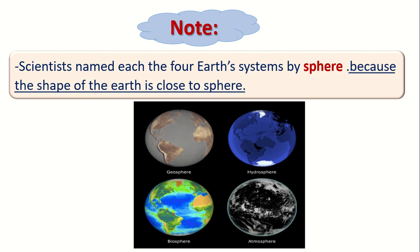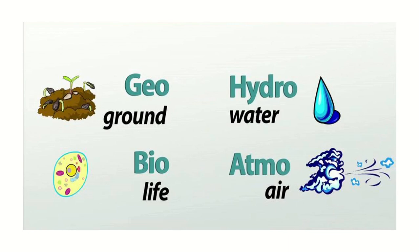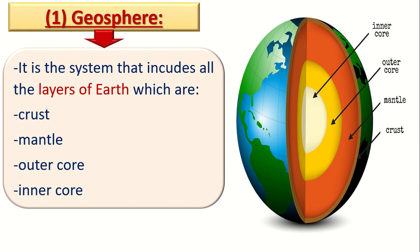Last time we talked about the Earth systems, and we said that scientists named the Earth systems by sphere — because the Earth has the shape of a sphere, and sphere means ball. The Earth systems can be called spheres: geosphere, hydrosphere, biosphere, and atmosphere.